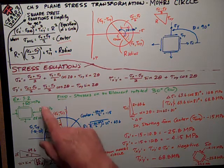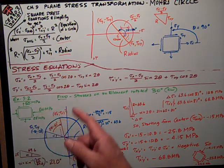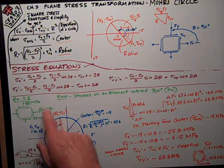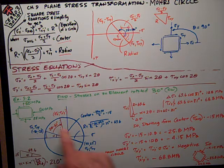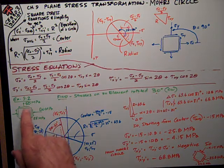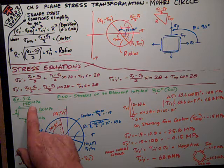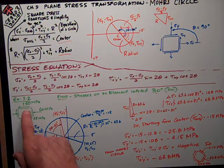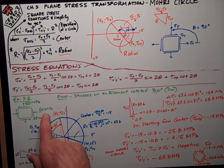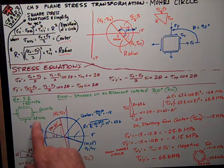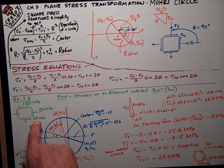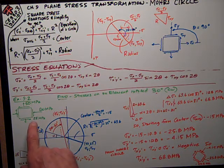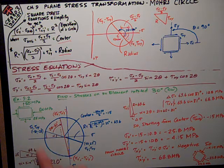I'm going to do example 9.2 from the book that I did on the previous video. I was given this state of stress: 50 megapascals positive sigma y, negative 80 sigma x, and the shear stress was negative 25 megapascals because it's down on the right side.